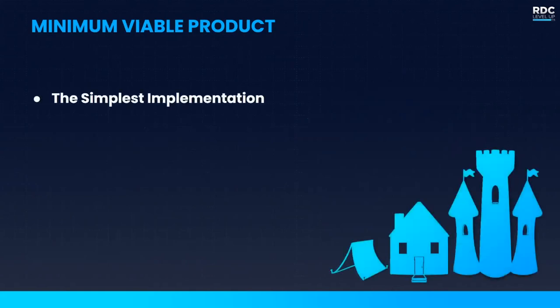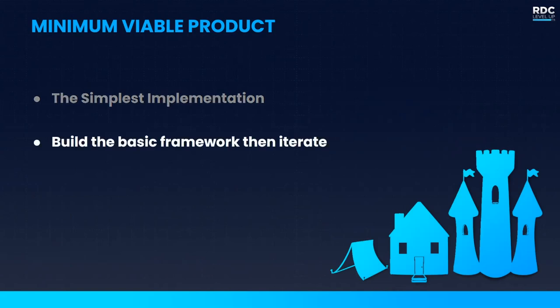Our next step after documenting is to identify our minimum viable product. As we discussed with Red Manta — your minimum viable product is the simplest implementation of your grand idea. It answers the question: what are the minimum features required to create the core fun experience I'm trying to release? You should be striving to build the basic framework with your initial release and then iterate over time. If you're looking to release the perfect feature, you risk never shipping it because there's always something you can do better. Player feedback is critical for iteration — it doesn't make sense to try and stick every system into your feature all at once.